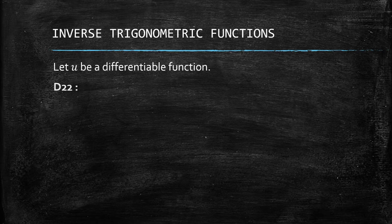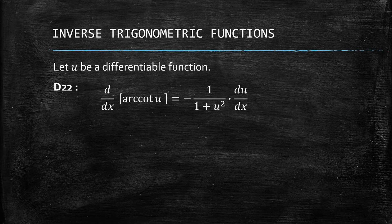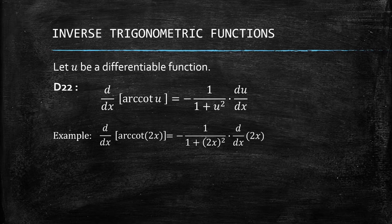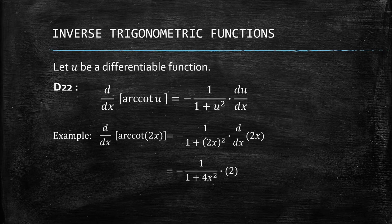Then we have arccot u. So arccot is just the negative version of arctan. We have negative 1 over 1 plus u squared, times du/dx. So for example, if it's arccot of 2x, we have the same process: negative 1 over 1 plus (2x) squared, times the derivative of 2x, which is 2. Simplifying, we get negative 2 over 1 plus 4x squared.